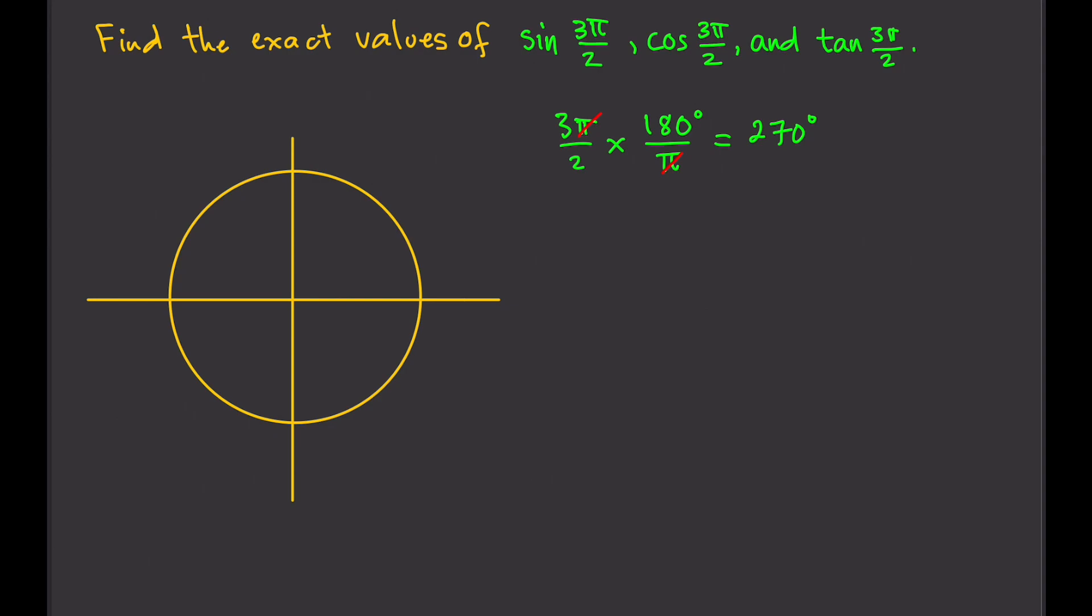So we know that this is 90 right here. This is another 90, so in total that's 180. This is another 90, 180 plus 90 is 270. So that means we're looking at this angle right here. That's 3π/2 equal to 270 degrees.